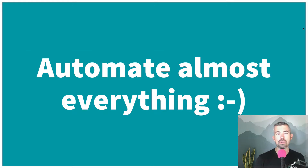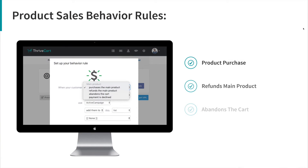You want to automate as much as you can because it's just going to be a better experience for everybody. There are a few different places these rules live. One of them, the most obvious, are product rules. You can actually set rules based off of everyone who interacts with your main products, and this is all done at the individual product level.